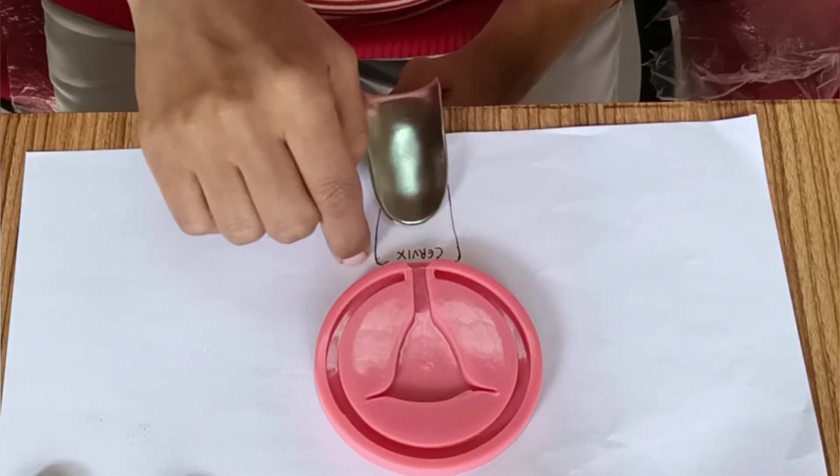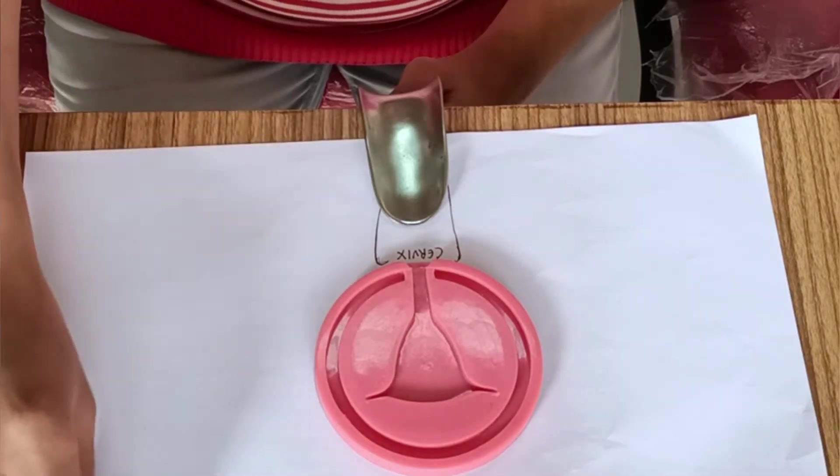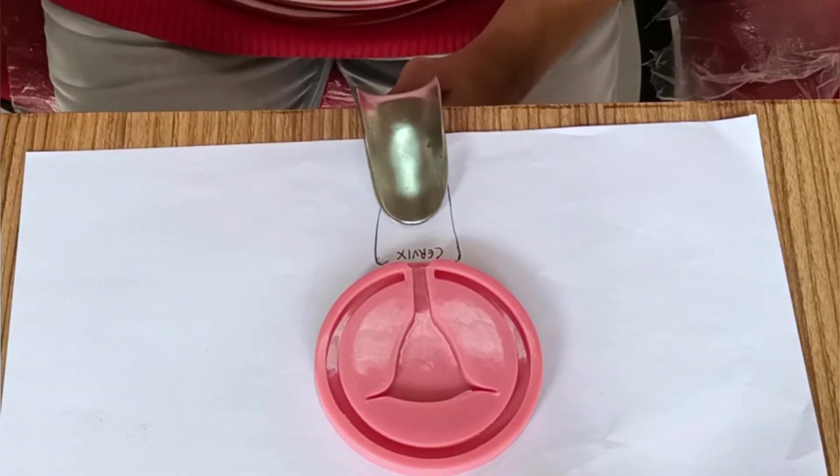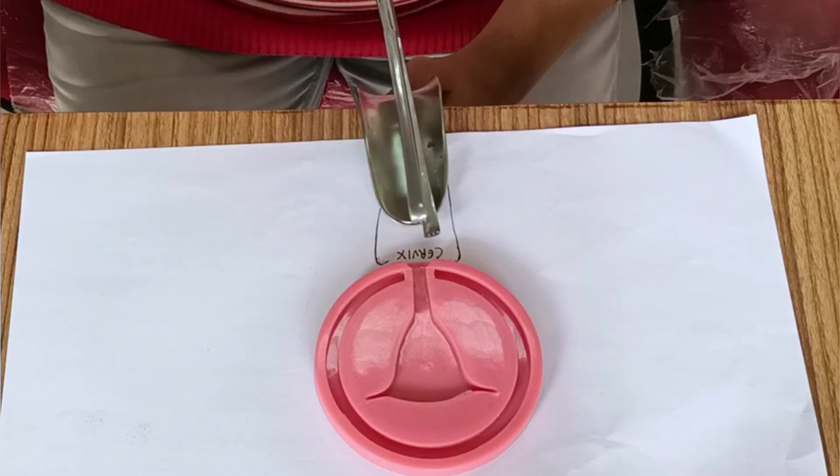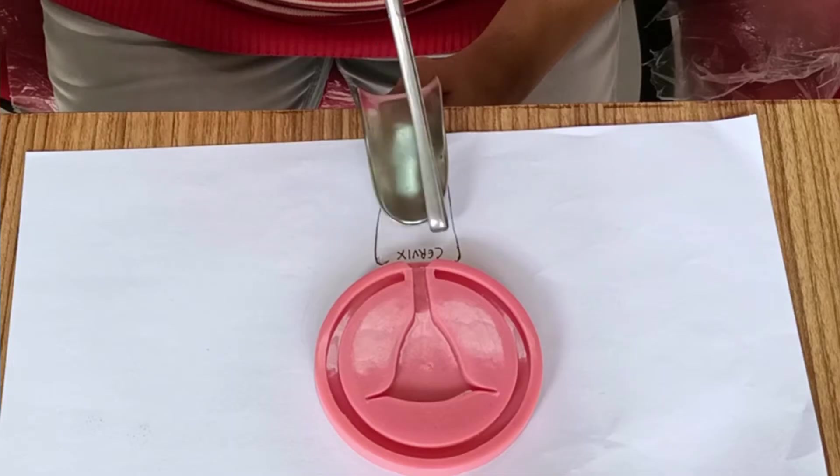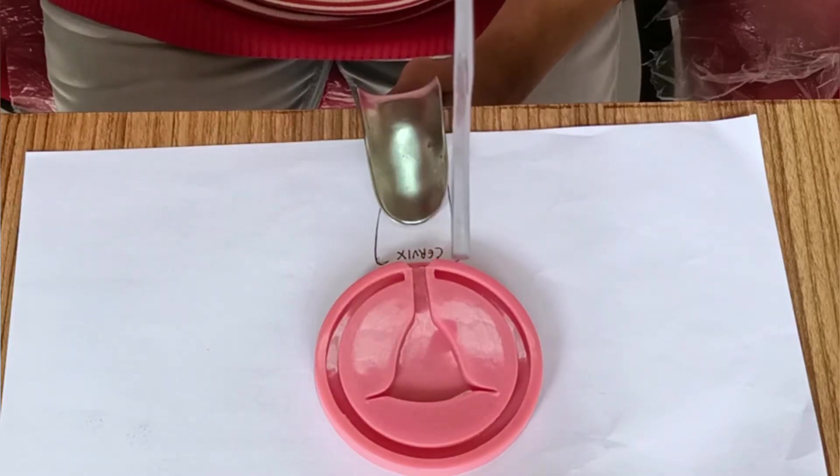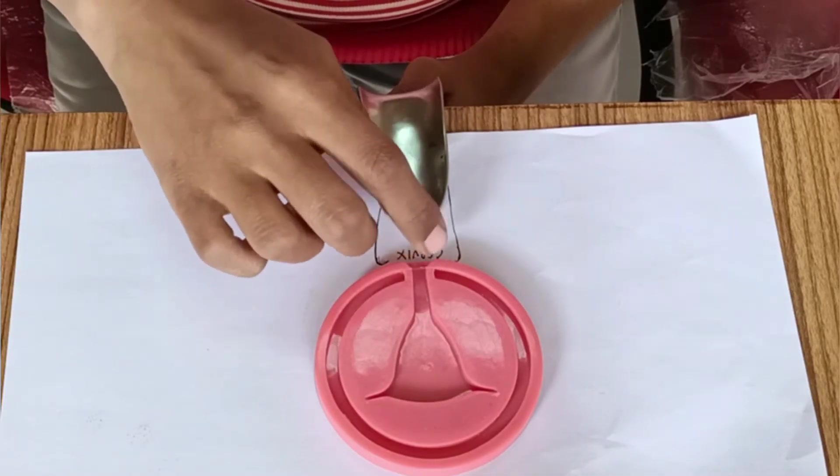Now my step two will be to visualize and hold the anterior lip of cervix. For this I require a Vulsellum. Keep the concave part of the Vulsellum towards the ceiling or towards the pubic bone and catch hold of the cervix.